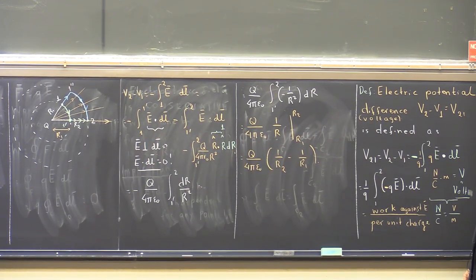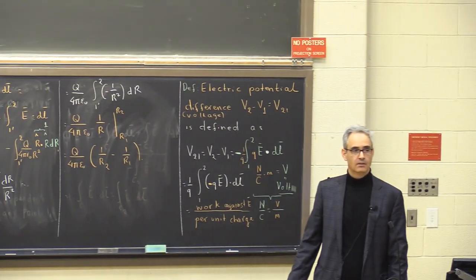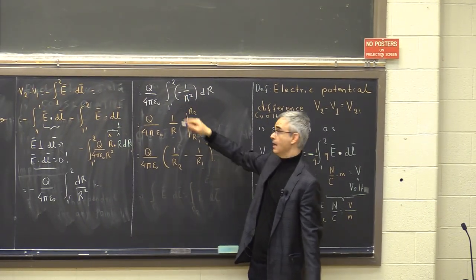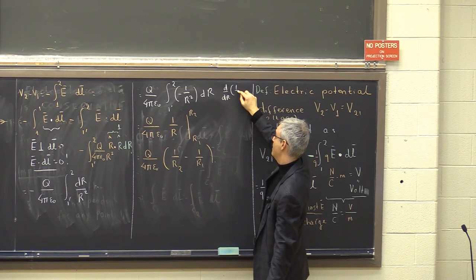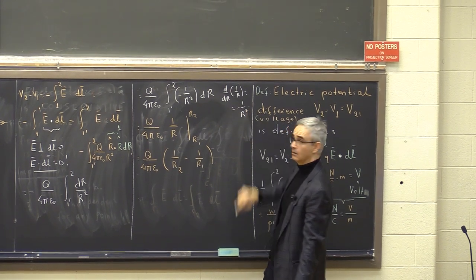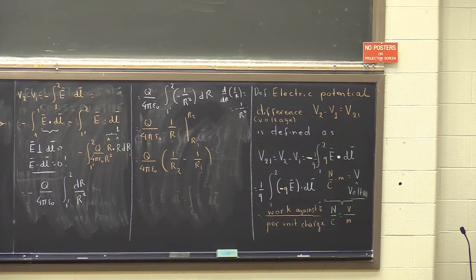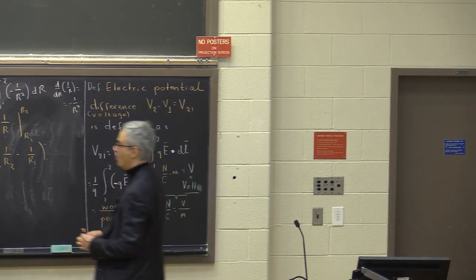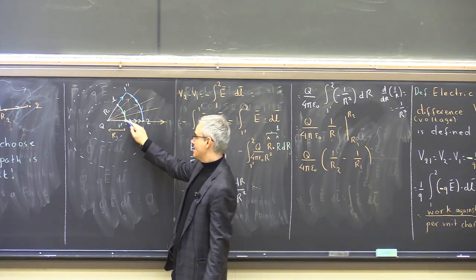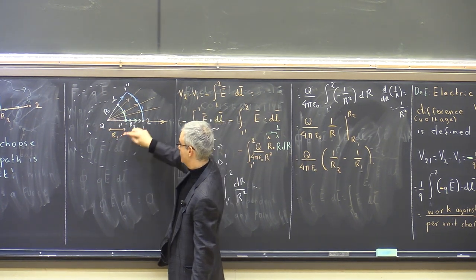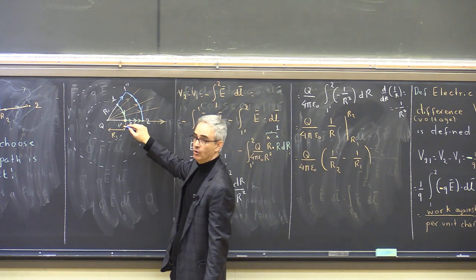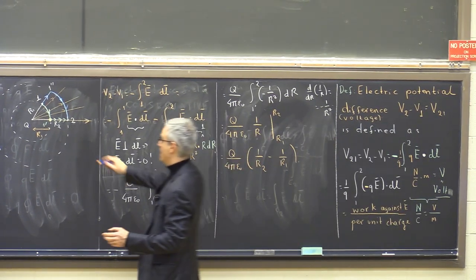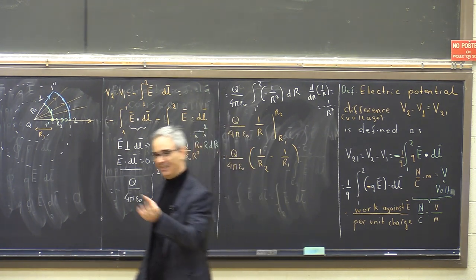Student question: would the result at 1 prime be negative? No — the minus sign was absorbed, because the derivative of 1/r is -1/r², so that minus is already accounted for. Another question: why evaluate at r1 rather than r1 prime? Because 1 prime is on the same circle as point 1, so its distance from the charge is still r1. I drew the circle intentionally so that 1 prime stays at the same distance from the charge — on the same sphere as point 1 in three dimensions.